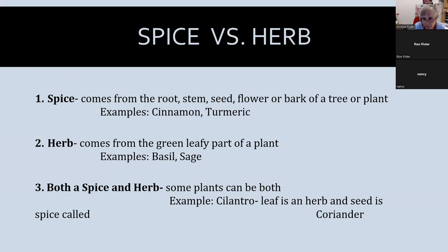Some plants can be both an herb and a spice. Cilantro is a good example: the leaf is the herb, and the seed is the spice — and we all know that is coriander.